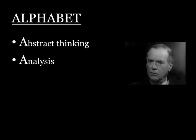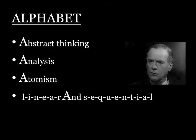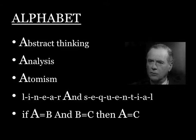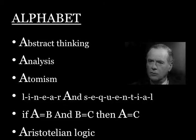This also allows for an emphasis on analysis. The alphabet provides the model whereby utterances may be broken down to the basic units we call letters. That model led to the notion that all matter may be broken down into atoms, introduced by the pre-Socratic philosophers known as Ionian physicists. And the alphabet brings with it a perspective that is linear and sequential — the basis of a logic that says if A equals B and B equals C, then A equals C. In other words, Aristotelian logic.